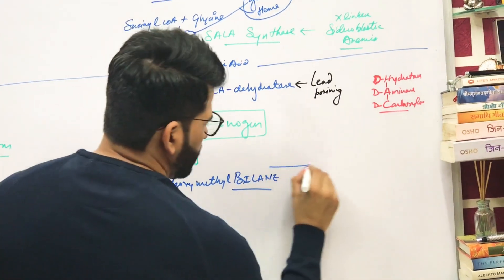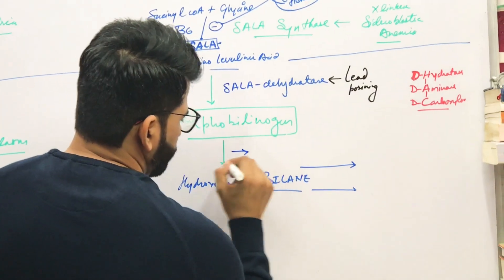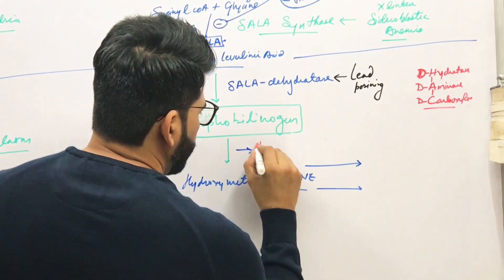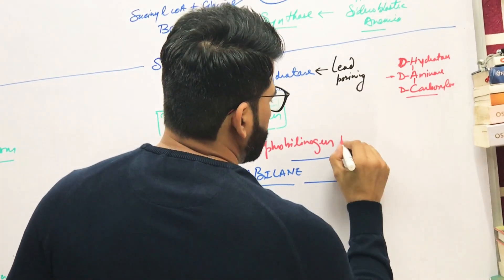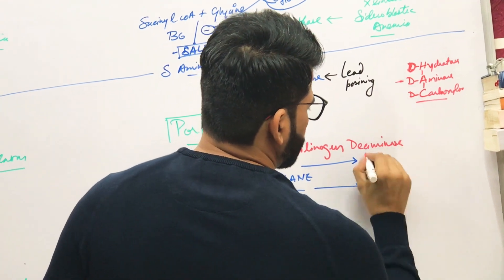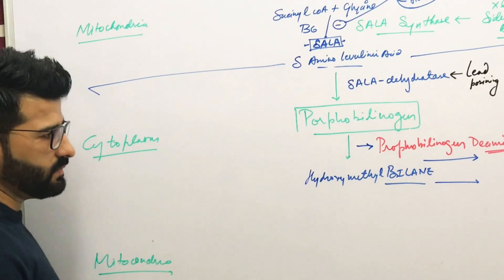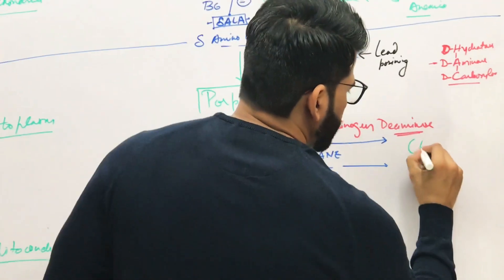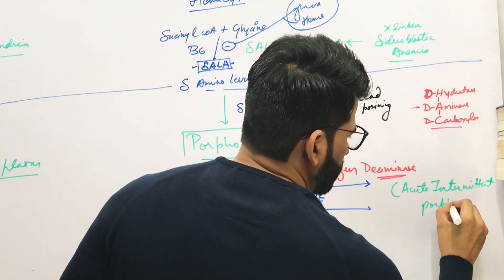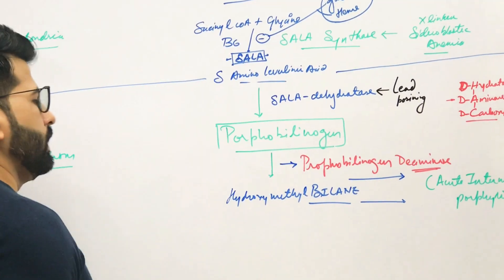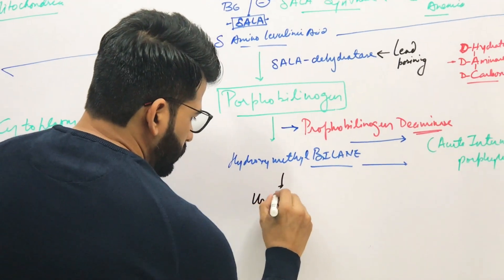Porphobilinogen further converts into hydroxymethylbilinogen. You can remember that by 'two lates' — hydroxymethylbilinogen. The enzyme required for this step is called porphobilinogen deaminase. If there is deficiency of this enzyme, that will cause acute intermittent porphyria.